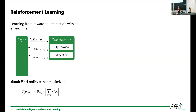Reinforcement learning is the basic setting of learning behavior from rewarded interaction in an environment. We have an agent that is supposed to learn a policy. The agent is repeatedly asked to commit to an action to take in the environment, and the environment responds with the current state of the environment and the reward for the agent.